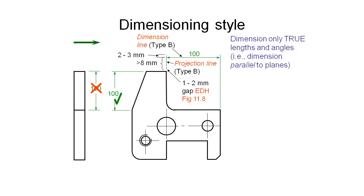Looking at the arrowhead style, we typically draw the heads about 3 to 5 millimeters long with a width of about 1 to 1.5 millimeters — only a little bit wider than the line itself.